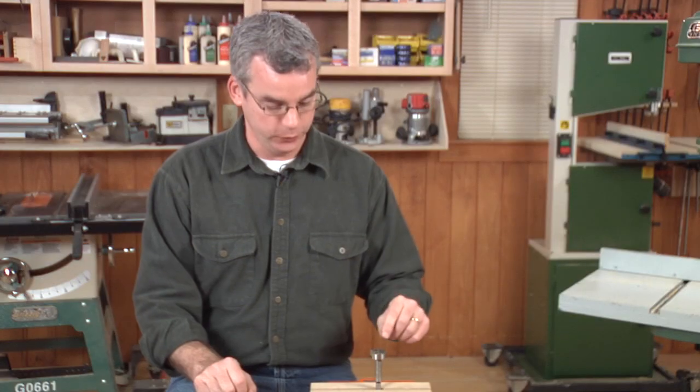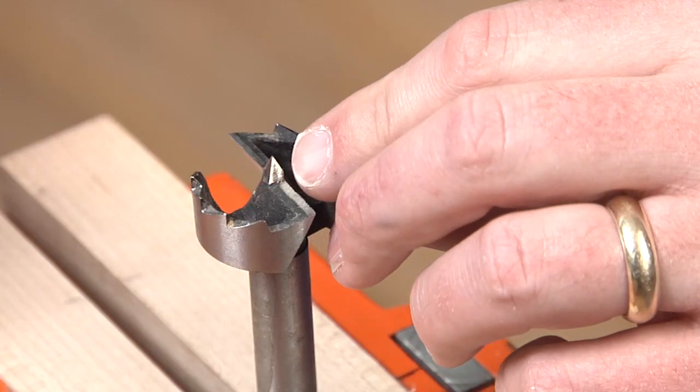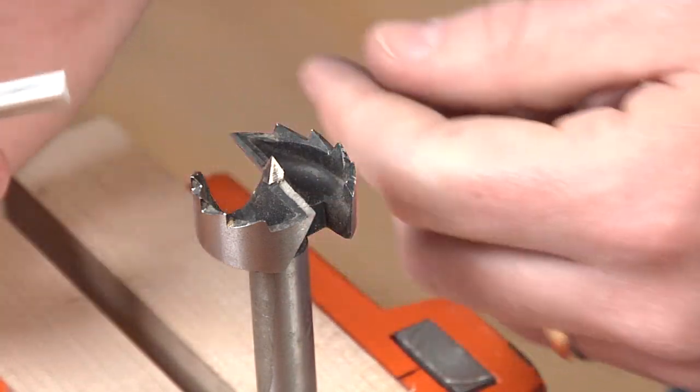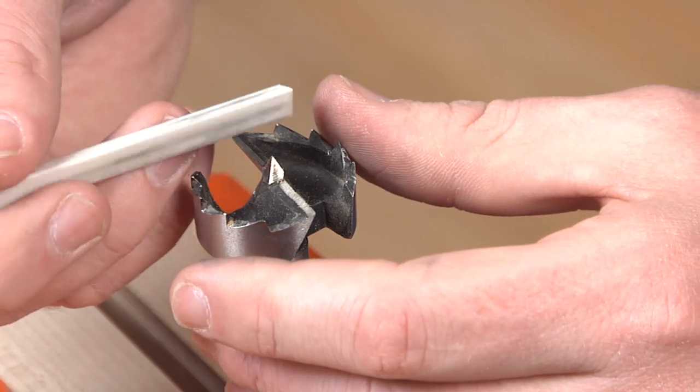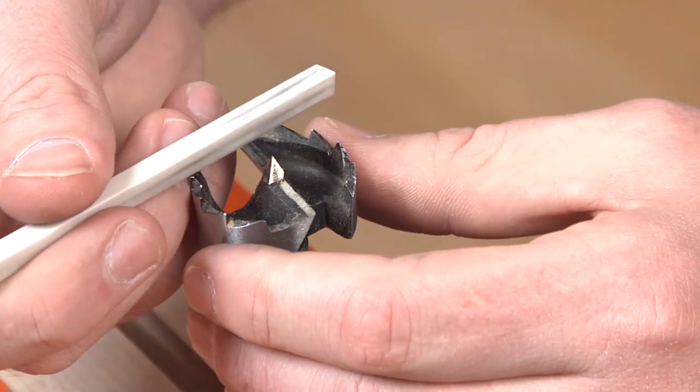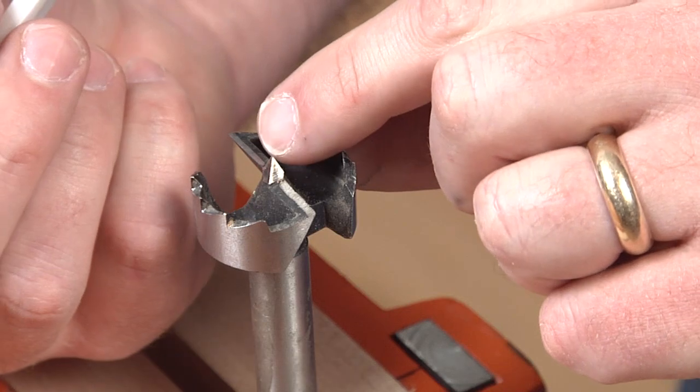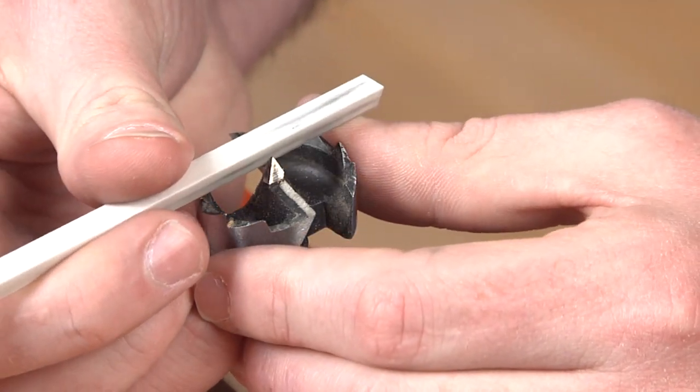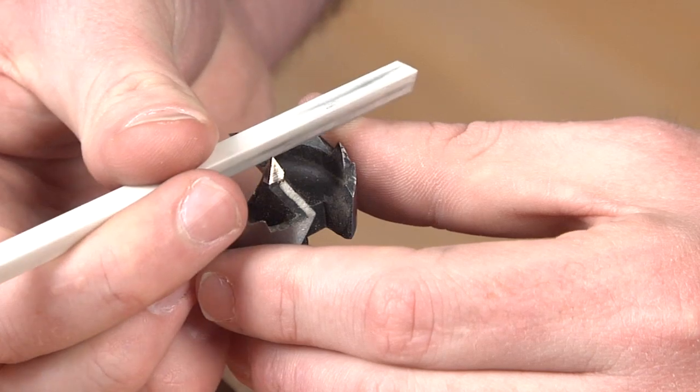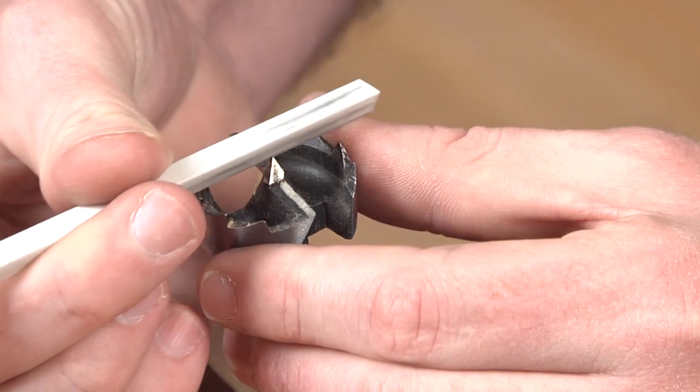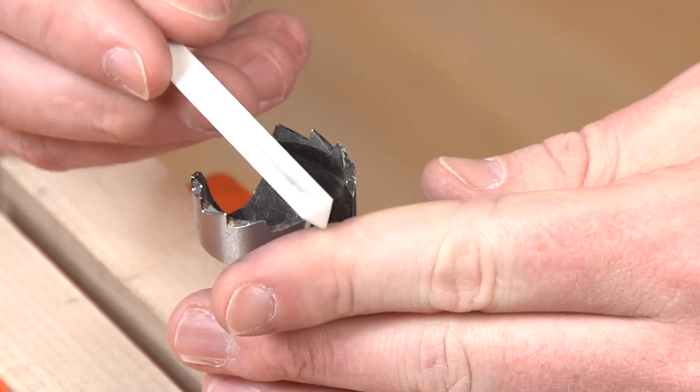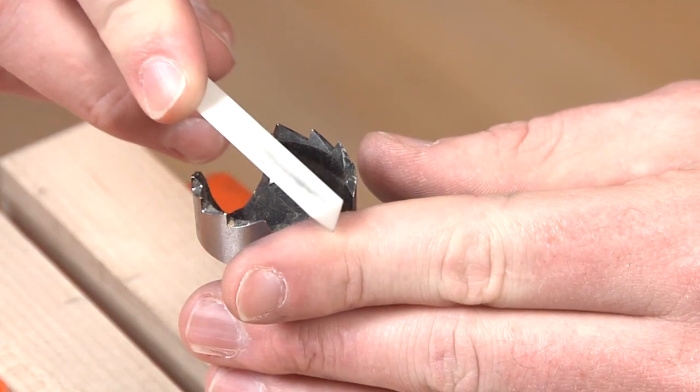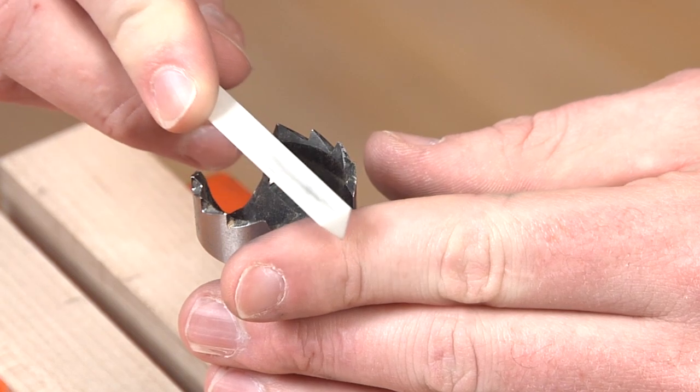And then finally we want to just touch up the centering spur here, and we're going to go back to our triangular slip stone for that. You want to use your thumb here as a guide to keep it off of the chipper that you just sharpened. And we just want to use a few strokes. And you want to do the same amount of sharpening on all sides of that, just to keep that spur dead center.